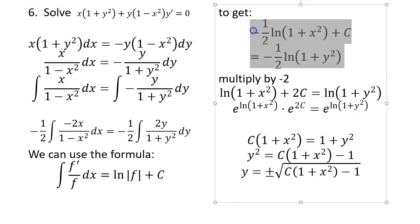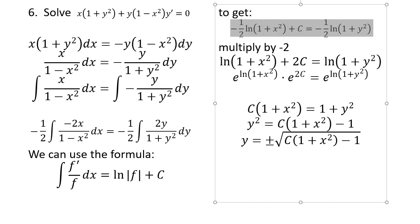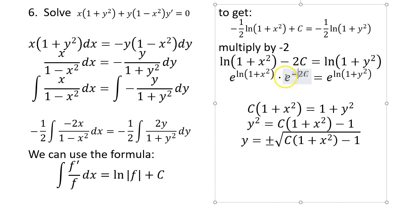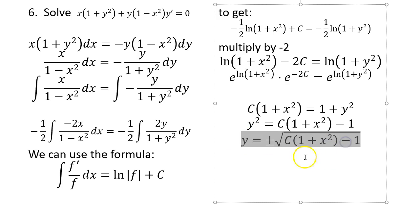So you get the left side and the right side. The −½ factors are annoying, so multiply through by −2. This gives a −2c on the right, but since it's just some constant, you can relabel it as c. Then the ln cancels, and solving for y gives the final answer.